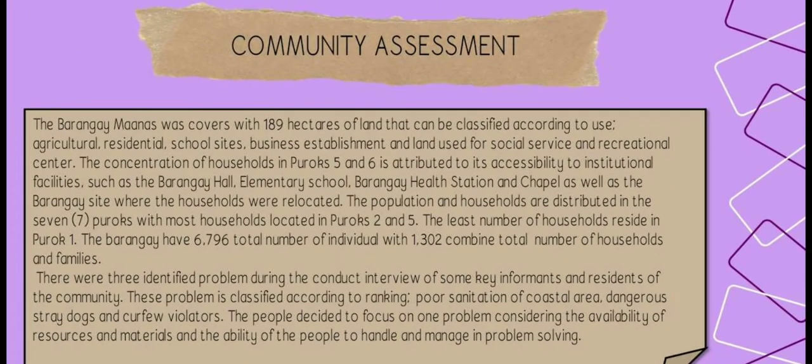Barangay Maanas covers 189 hectares of land classified according to use: agricultural, residential, school sites, business establishments, and land for social service and recreational centers. The concentration of households in Puruk 5 and 6 is attributed to accessibility to institutional facilities.